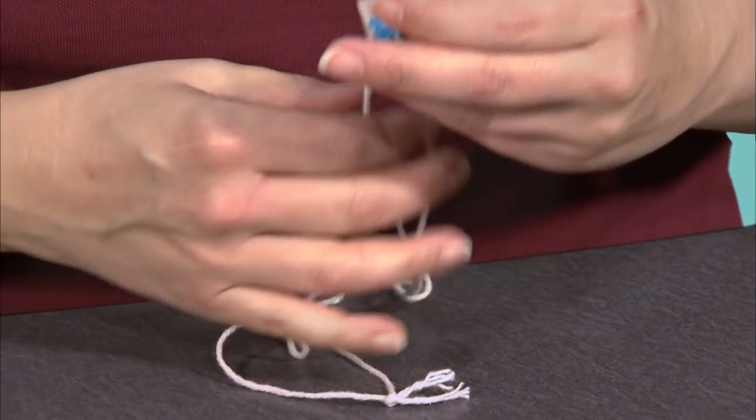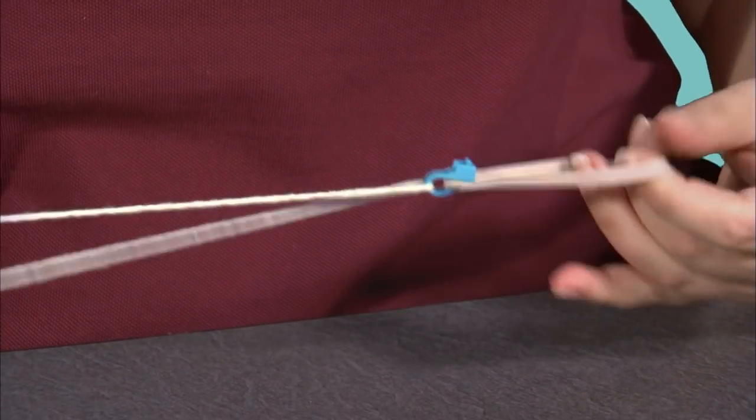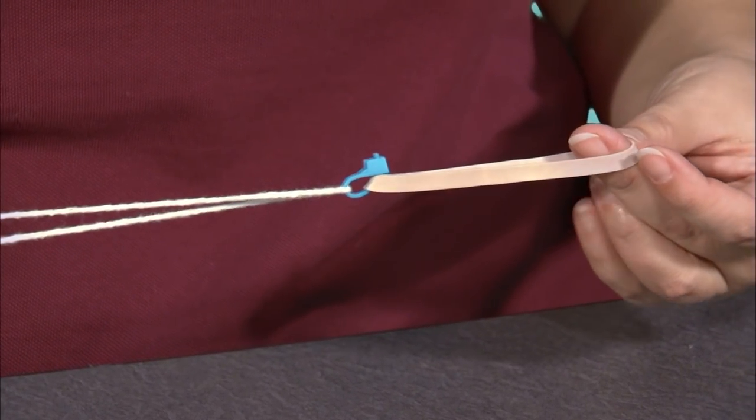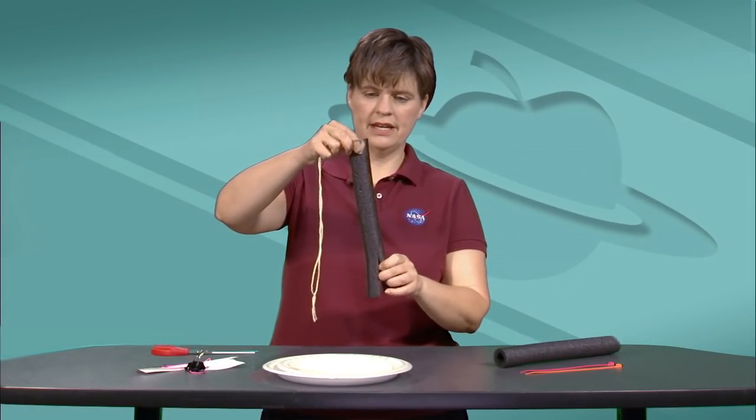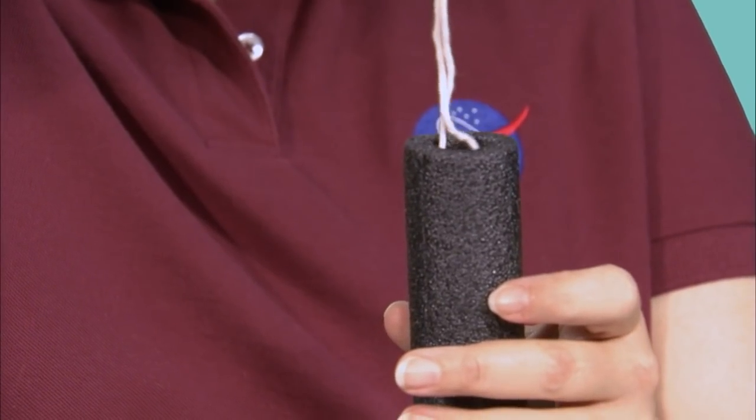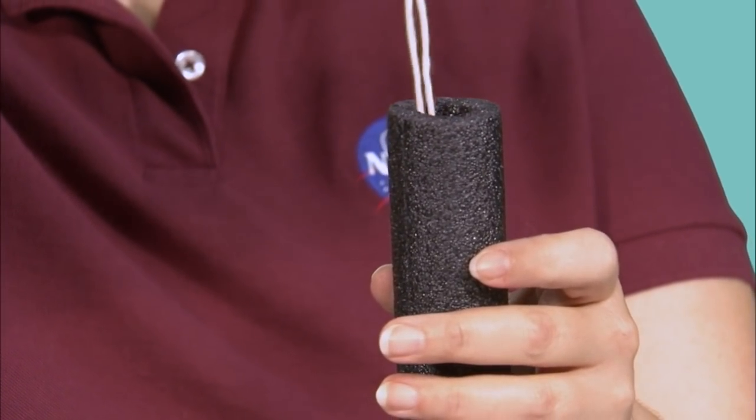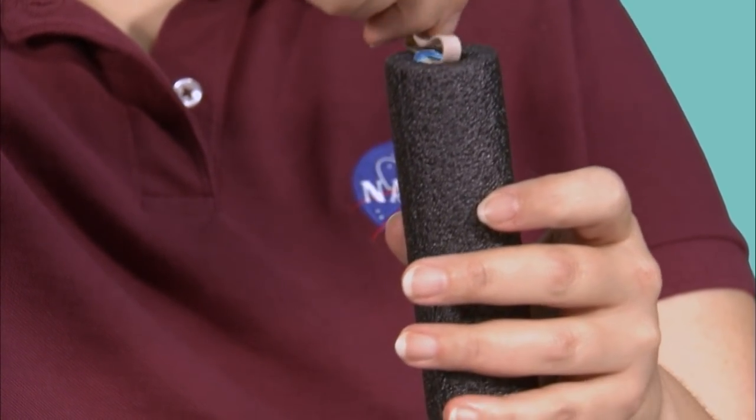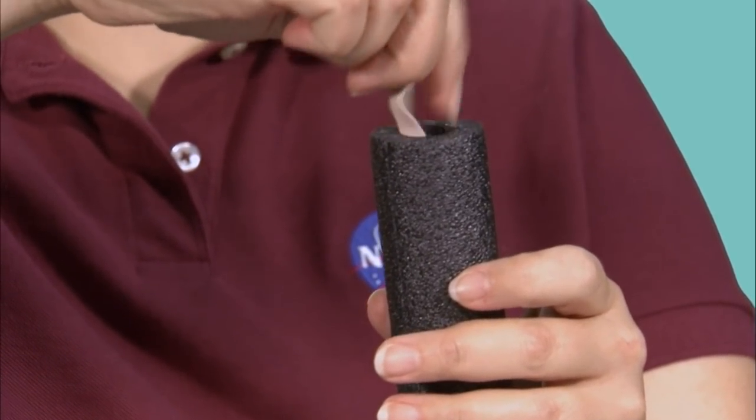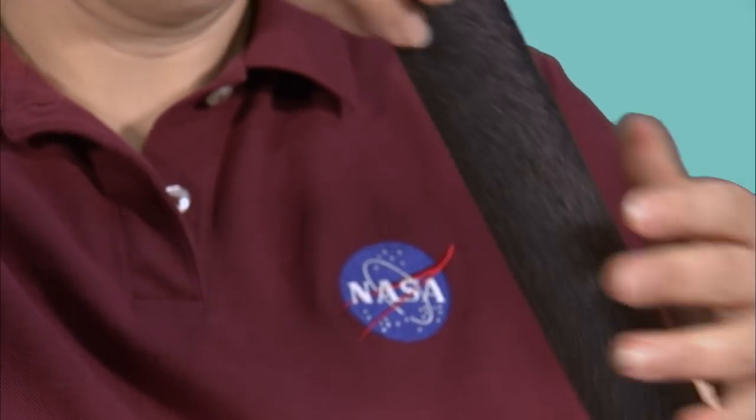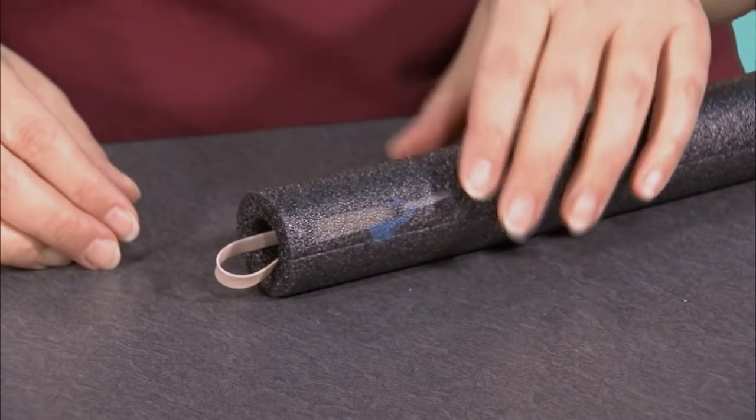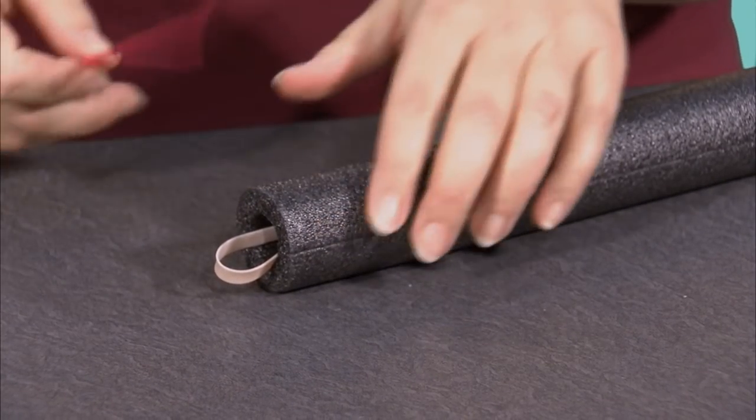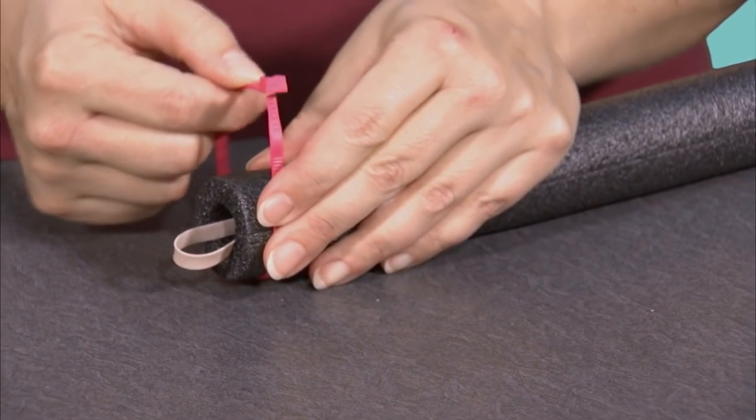This zip tie here is going to keep the insides of the rocket from pulling out. Drop the string from the top down toward the flared end. Now remember that zip tie is inside the rocket. Now attach a zip tie to the nose of the rocket in front of the other zip tie. Wrap it around the nose.